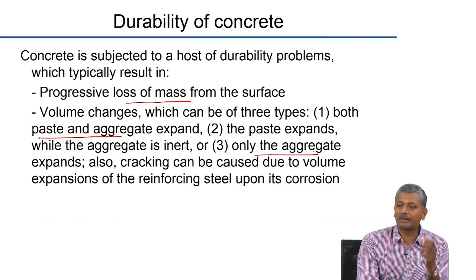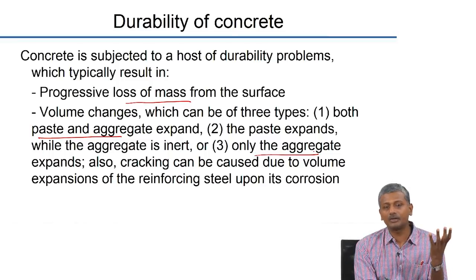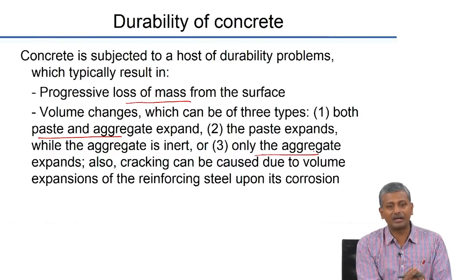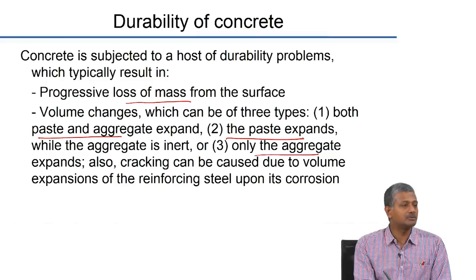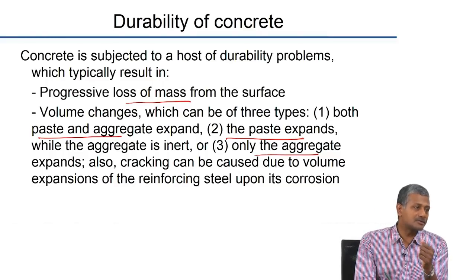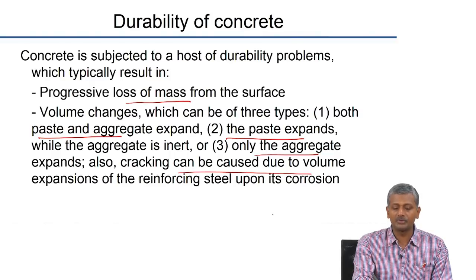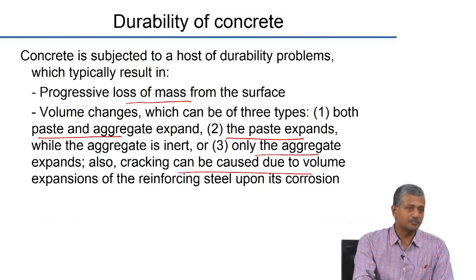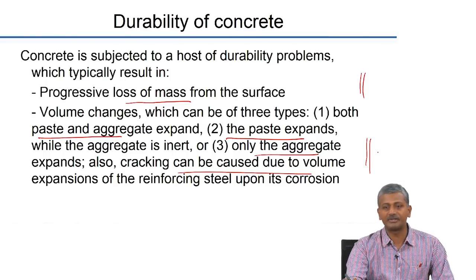In the case where only aggregate expands, that is ASR. Both paste and aggregate can expand when there is freezing — water inside the pores of the aggregate and the paste freezes to ice, leading to expansive pressures. The second case is when only the paste expands while the aggregate is inert, which happens during sulphate attack or other chemical attacks that alter the paste. Cracking caused by reinforcing steel corrosion can also lead to volume change and expansive pressures. So we have two manifestations: loss of mass from the surface, and expansion of the concrete.